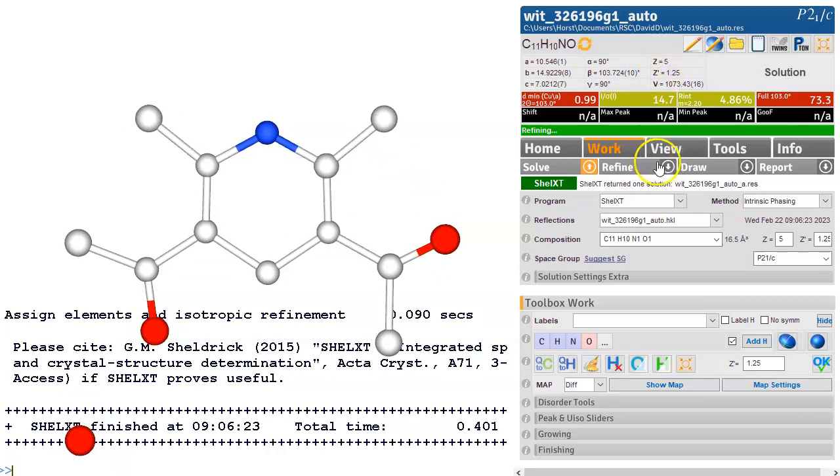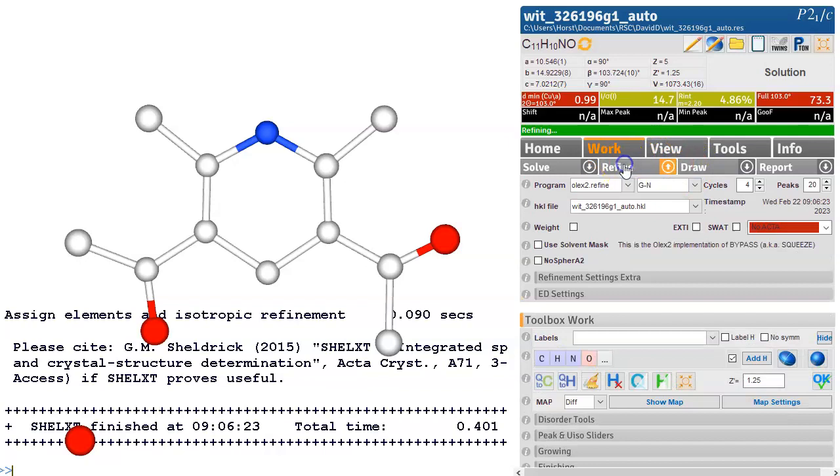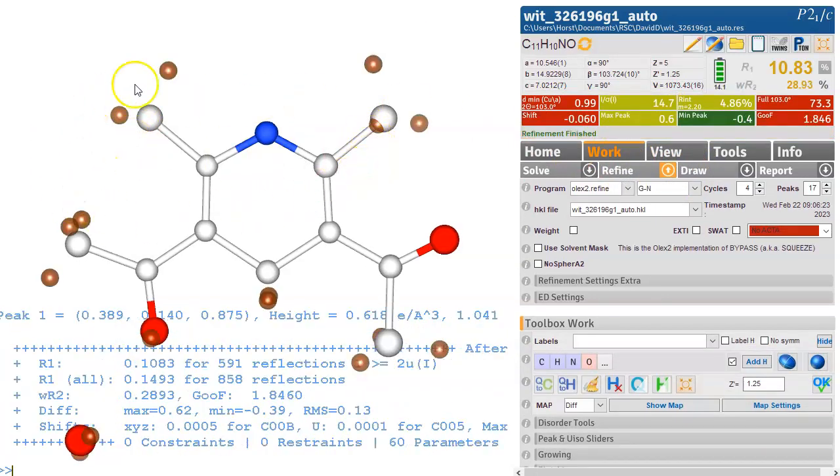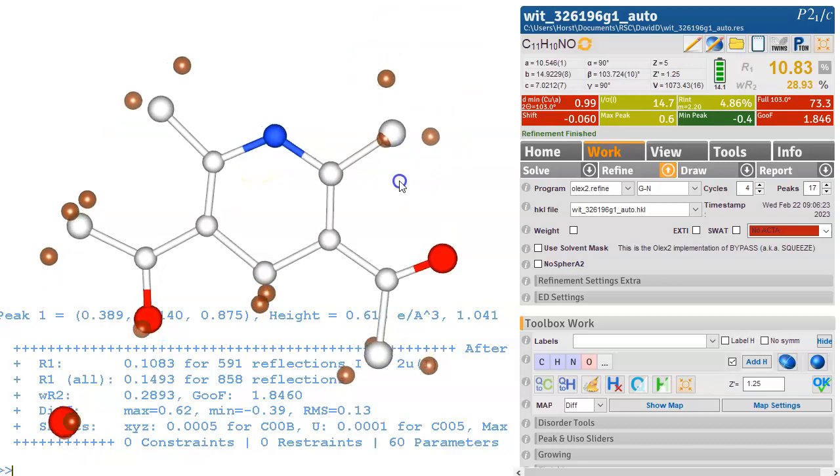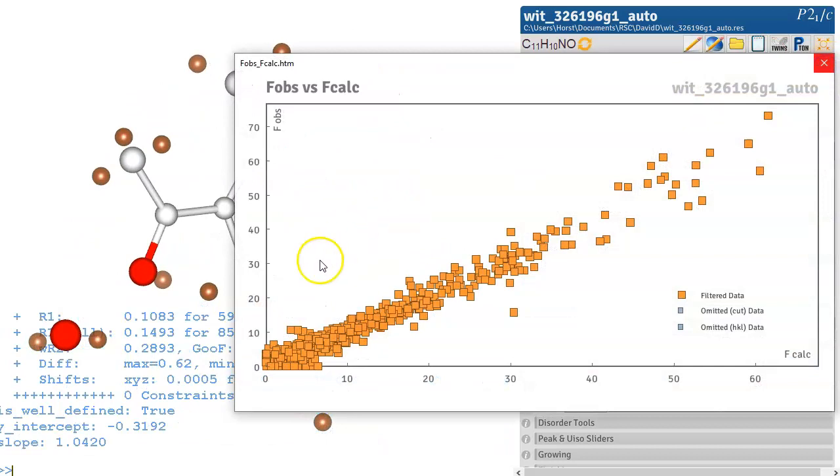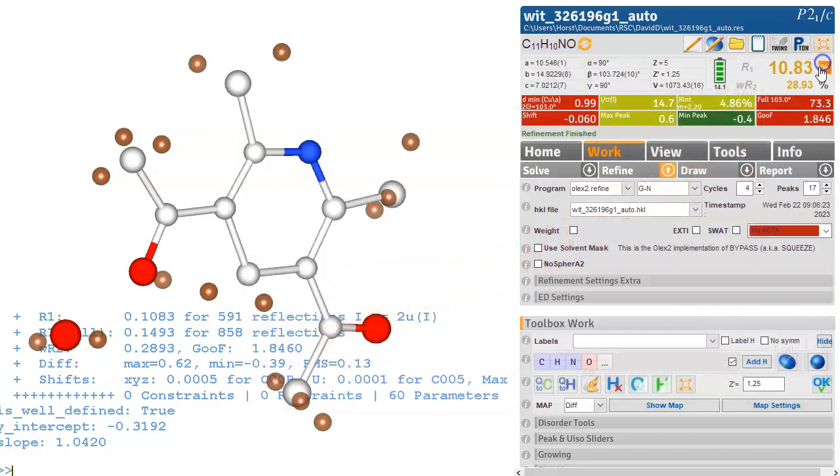And we are going to do straight away and do a refinement cycle. So we just refine it so this is the solution and now we are adjusting the positions and also the UEQ the size of these balls to fit our data. So we can look at this Fobs Fcalc plot so this is what we've calculated from our model and this is what the data tell us. So it looks quite good so there's something going on it looks like it might become a straight line when we are finished.